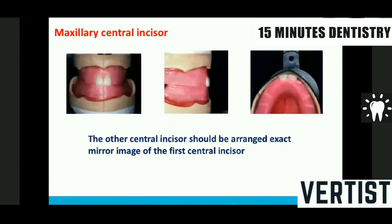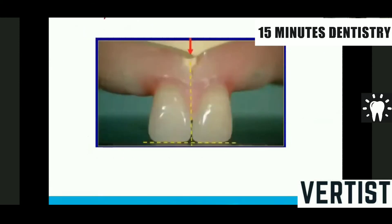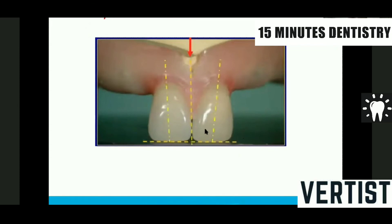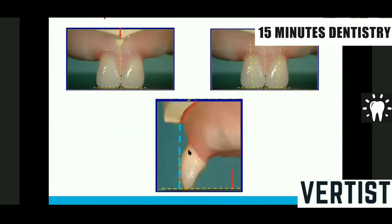The other central incisor should be arranged exactly like a mirror image to the first central incisor. This photograph shows the teeth without any occlusal rim, so we can discuss better. The central incisors are placed exactly in the midline, touching the occlusal plane, slightly mesially angulated, and when seen from the profile, slightly anteriorly angulated.